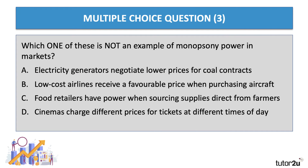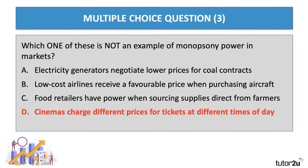Question three. Which one of these is not an example of monopsony power in markets? Have a go at this question by pressing the pause button. So which one of these is not an example of monopsony power? I think the answer is D. The first three are good examples of monopsony power — good applied examples you can add to your notes. D isn't monopsony — D is price discrimination. Cinemas charging a different price for tickets at different times of the day to see the same film is a great example of price discrimination.